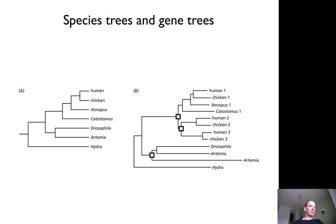But the human 1 gene is actually more similar to the Xenopus 1 gene than to the human 2 gene. Of course, the duplication happened before the separation of Xenopus and humans. The same applies to human 2 and chicken 2, and also Catostomus 1.